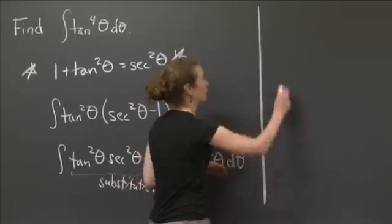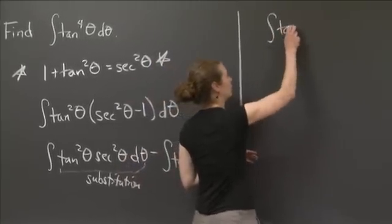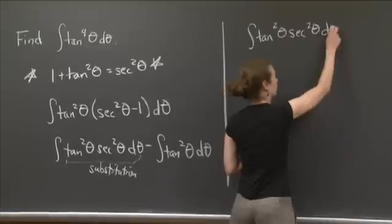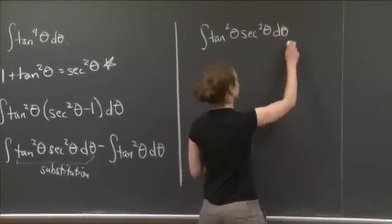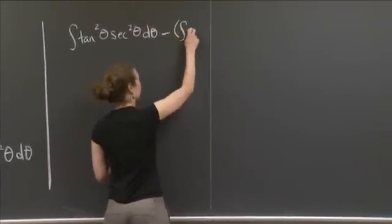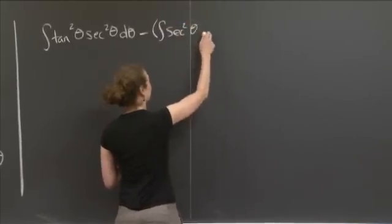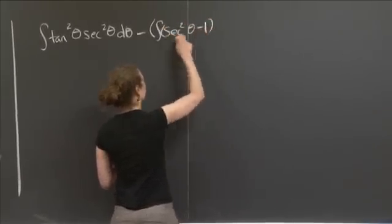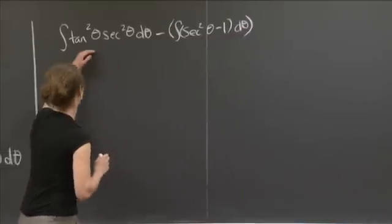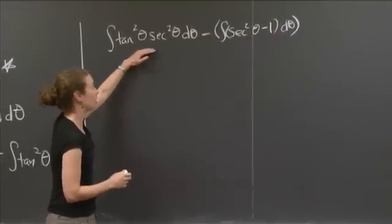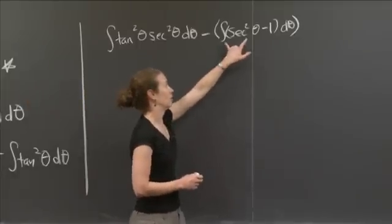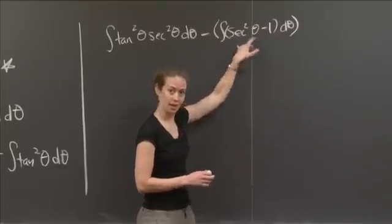Let me write this down. OK, now I'm going to do my replacement. And minus the quantity, the integral, secant squared theta minus 1 d theta. Let's make sure I didn't make any mistakes. So I had tan squared theta, secant squared theta, d theta. That looks good. And then I'm subtracting tan squared theta, the integral of tan squared theta d theta. And that's that. So I'm OK.